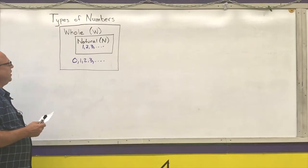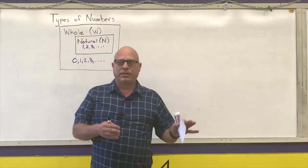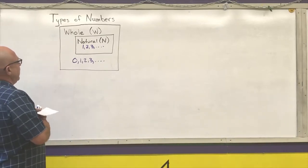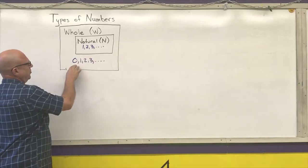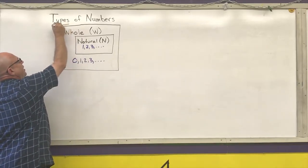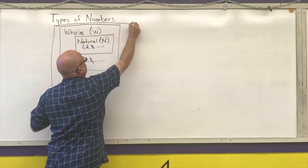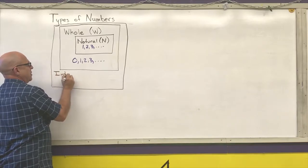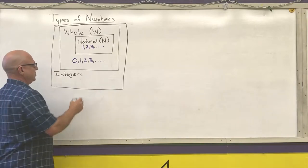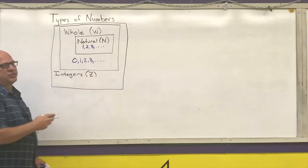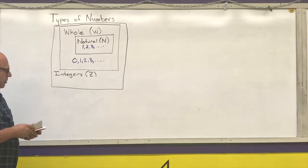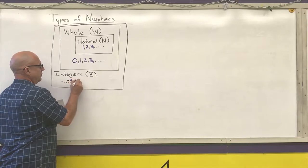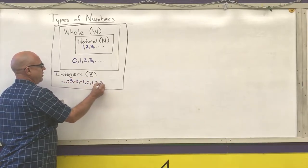The next thing that progressed is we learned the concept of negative numbers. Owing somebody something is the original concept of where negative numbers came in. If we take all of the natural numbers, zero, and all the negatives of the natural numbers, we have a group of numbers called integers. The integers have the symbol Z, which is the first letter in the German representation for the word integer, and it goes from negative infinity through negative three, negative two, negative one, zero, one, two, three, all the way up to infinity.